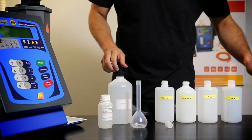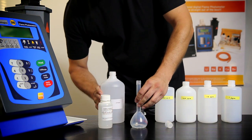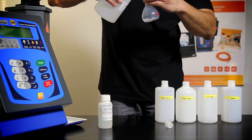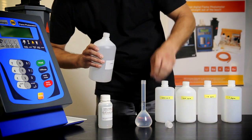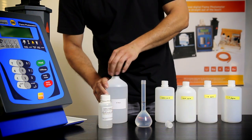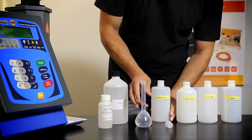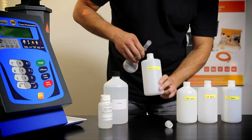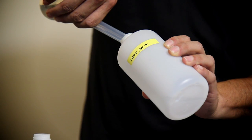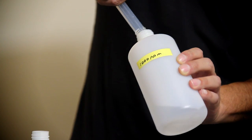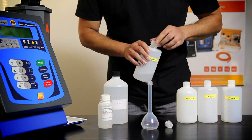Add deionized water to the flask up to the mark. Pour the flask contents into one of the beakers and stir well. This is now the 1,000 ppm standard.